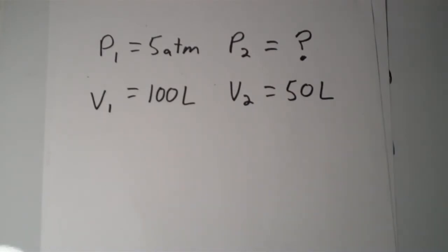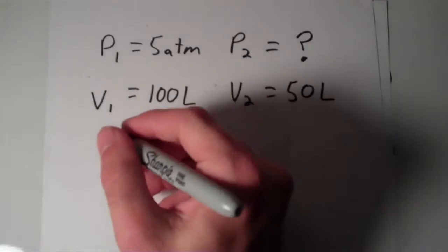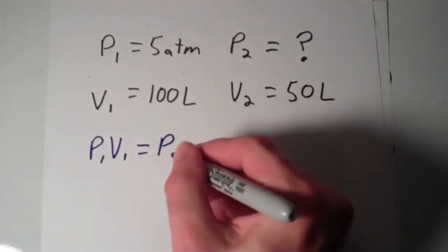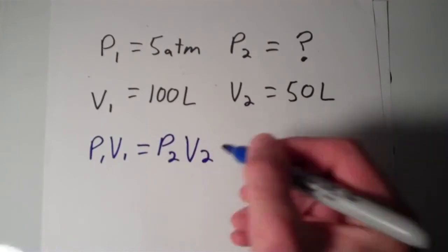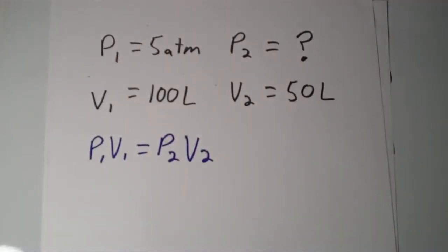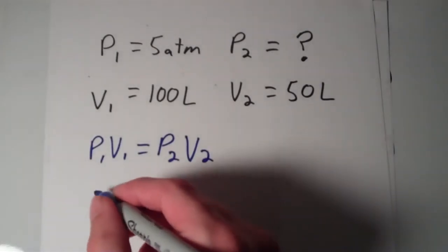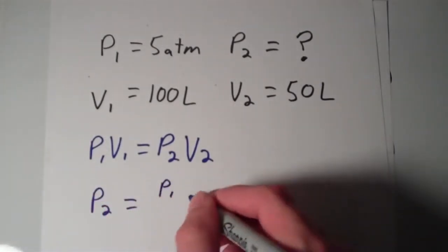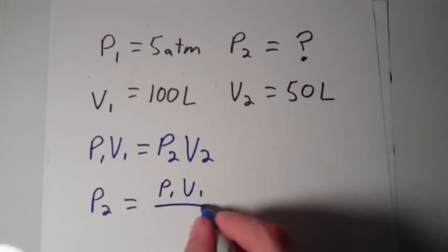Well, all you have to do is just use your two-point form of the equation. You can say P1V1 equals P2V2, which is just equal to some constant. We're looking for P2, so I'm going to divide the whole equation by V2. And I'm going to get that P2 is equal to P1 times V1 over V2.